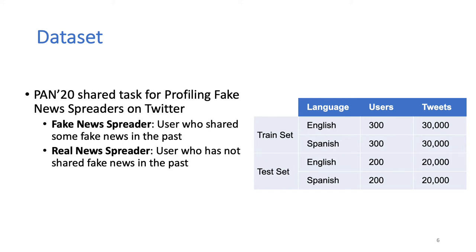This data contains a balanced set of users along with their Twitter feed and known ground truth about the users. Specifically, users that shared some fake news in the past are labeled as fake news spreaders. This data consists of a train and a test set for English and Spanish language, and the training set includes 300 users with 100 tweets for each user, resulting in 30,000 tweets for each language. Similarly, the test set contains data for 200 users in each language. As recommended by the shared task, the English and Spanish datasets have been treated separately in our experiments.